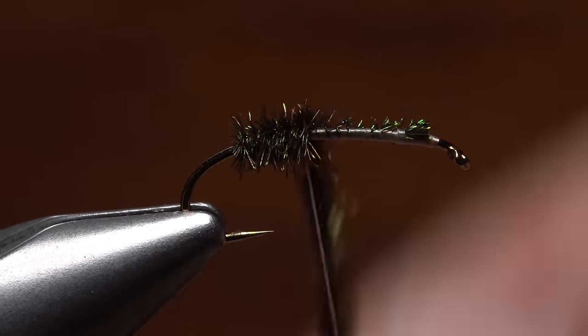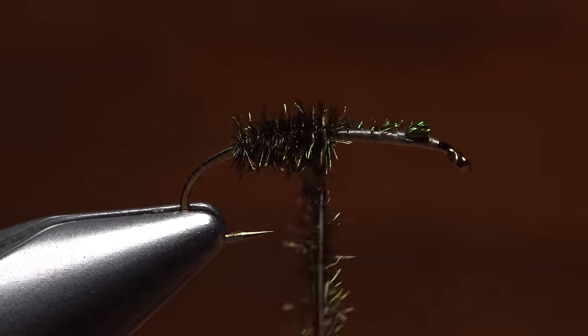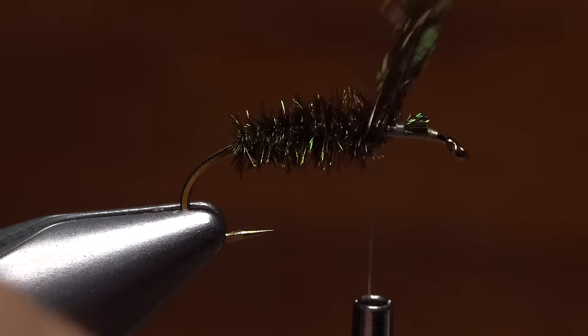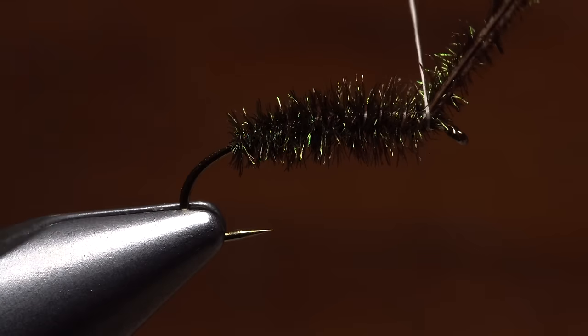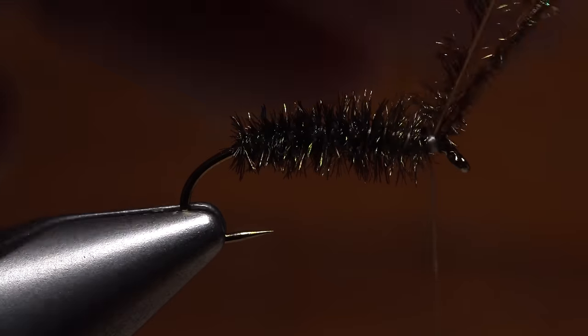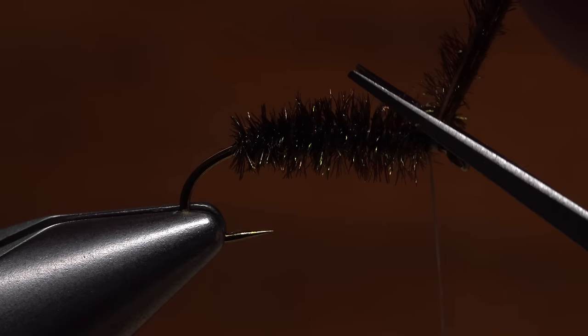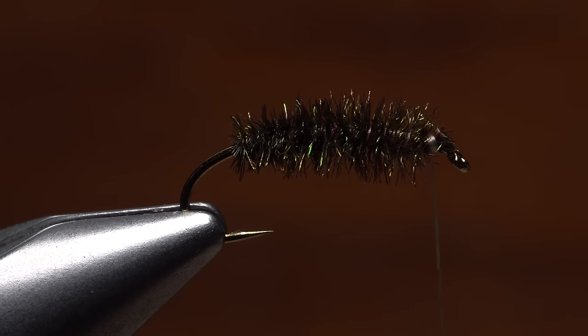I like peacock for the underbody mainly because with the addition of super glue it keeps the foam body from rolling around the shank. It also adds a bit of iridescence to the underside of the fly. Just before reaching the hook eye, secure the herl with a few turns of tying thread and then snip the excess butt ends off close.